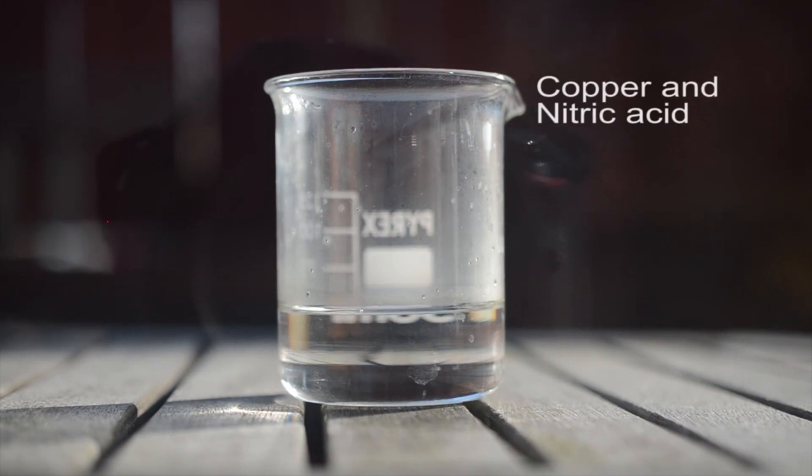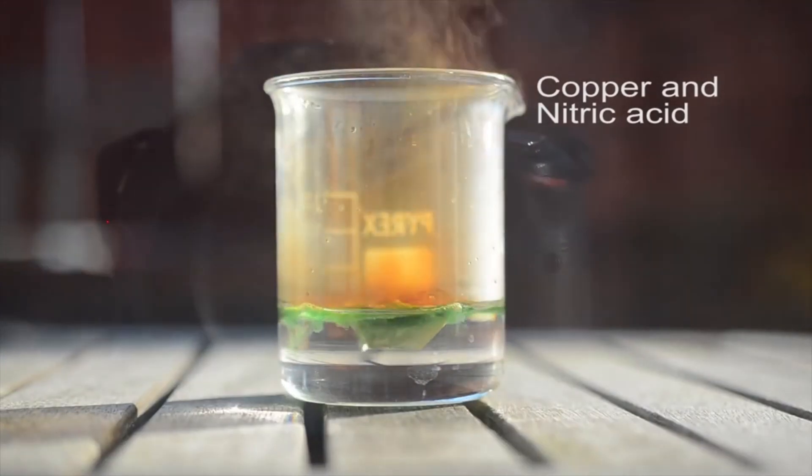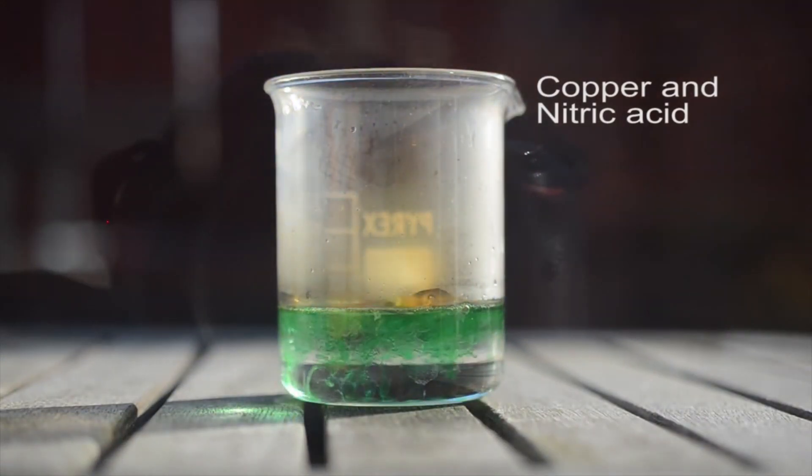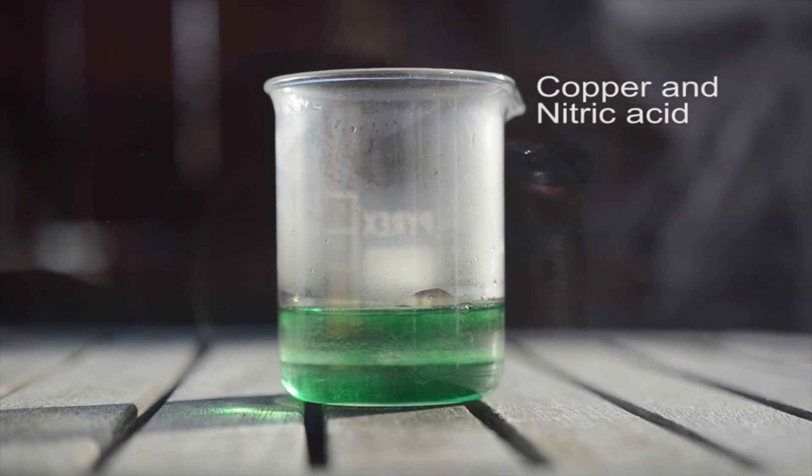The reactions between copper and nitric acid are examples of oxidation reduction reactions, where gaining electrons reduces one element and losing them oxidizes the other. Nitric acid is not only a strong acid, it is an oxidizing agent.